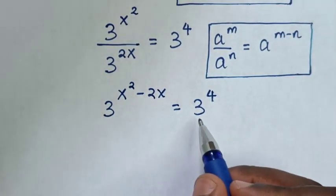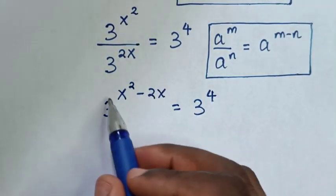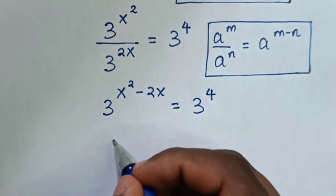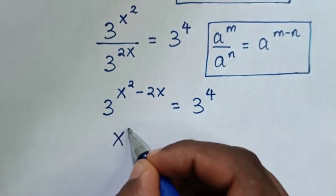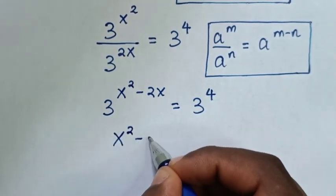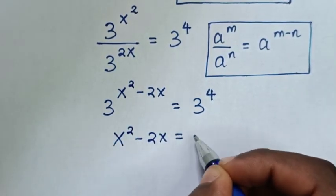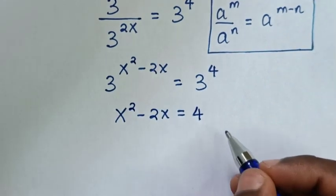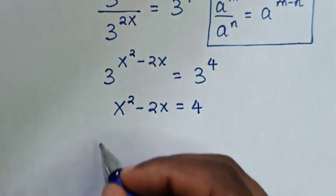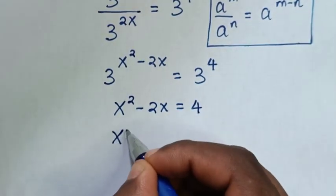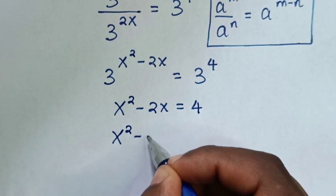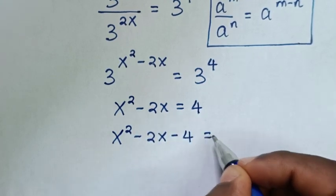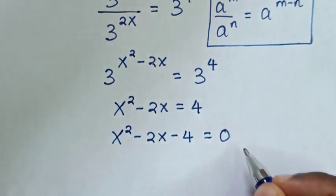Now in here we have the same base, so we'll compare these powers. So it will be x square minus 2x is equal to 4. Then we take this 4 to the left side, so it will be x square minus 2x minus 4 is equal to 0.